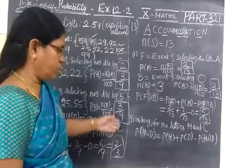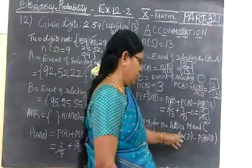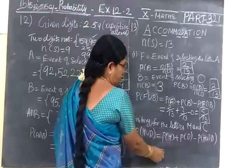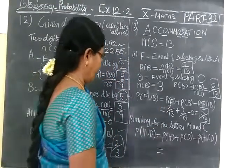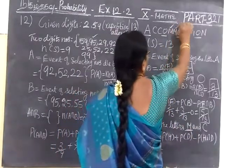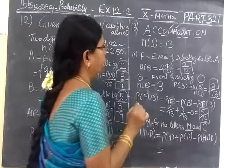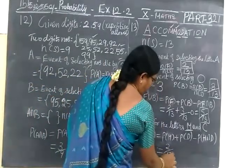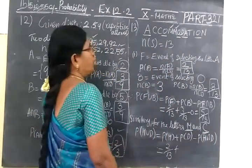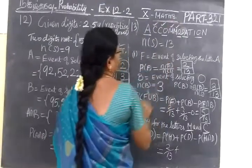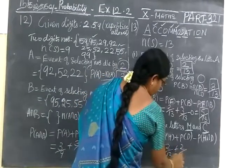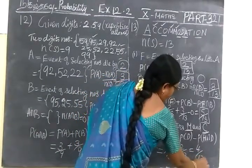So in the same way in the question it is given we can select the letters M and C. So just write the answer only because the same step we can write it. So P(M), the letter M, you see M how many times? 1, 2, two times only it is coming. So you can write 2 by total 13. And C, the letter C, C how many times? Here 1, 2. Now we are talking only 2. So 2 by 13. So 2 by 13. So the answer is 4 by 13.